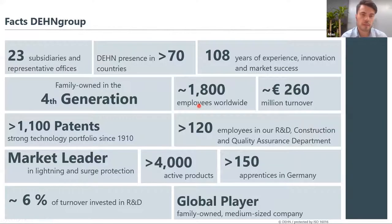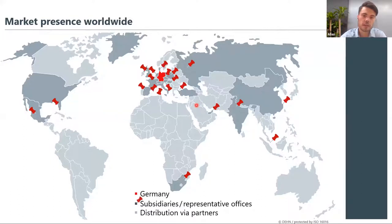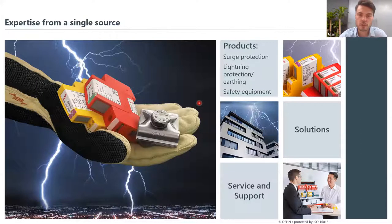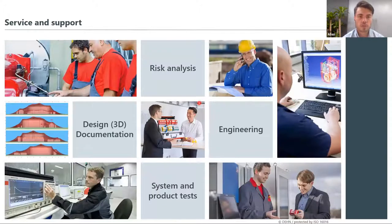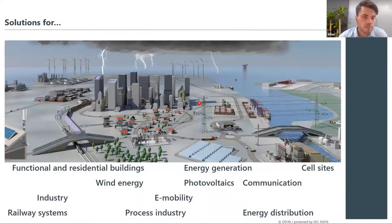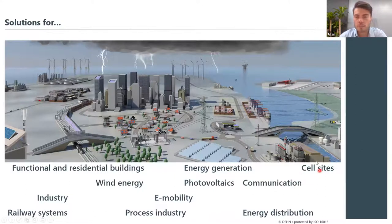DEN is a German-based family-owned company active in more than 70 countries worldwide. We have more than 23 subsidiaries across the world and we are not only manufacturers of surge protection devices but also manufacturers of external lightning protection, including air termination rods, finials, and earthing systems. DEN also has an engineering department where we do new designs and risk assessments.